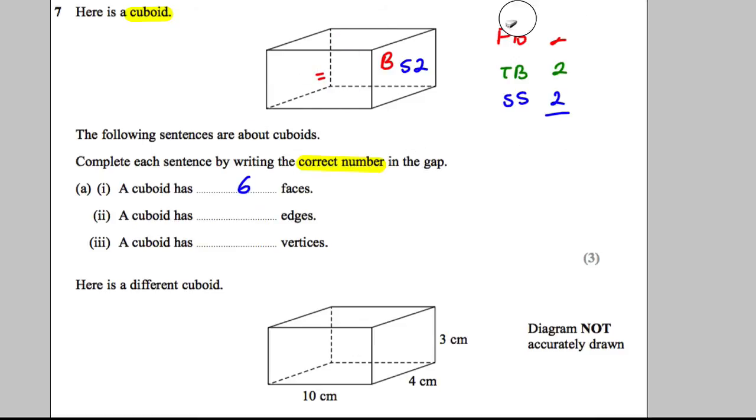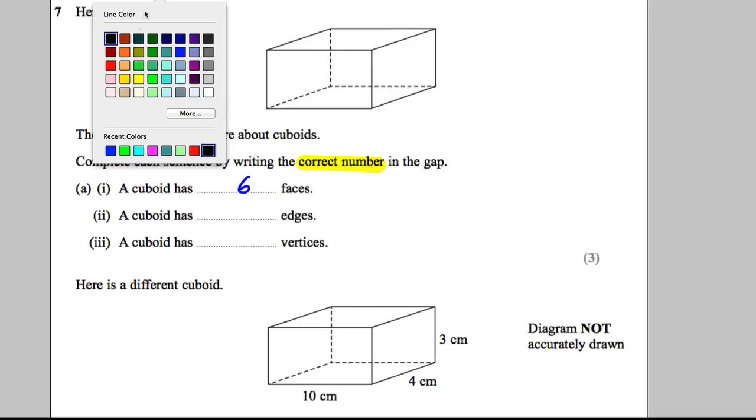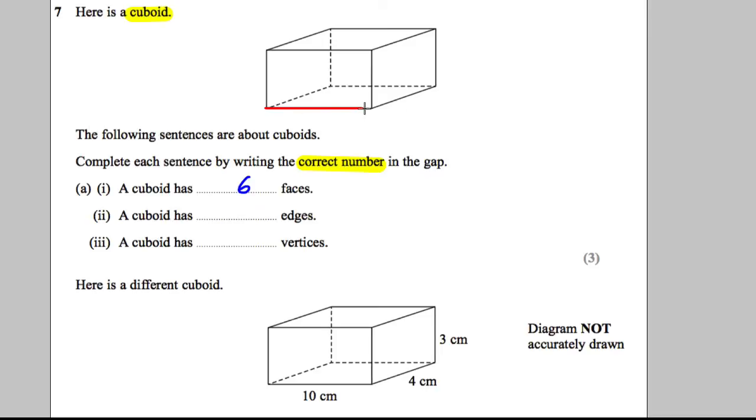Now let's deal with the cuboid has how many edges. An edge of a shape is a line where two faces meet each other. So I'm going to draw in the edges for you in a different color: one edge, two edge, three edge, four edge, five edge, six edge, seven edges, eight edges, nine edges, ten edges, eleven edges, and twelve edges. I would encourage you in the exam to draw over the shape to make sure you don't make a mistake. 12 edges.